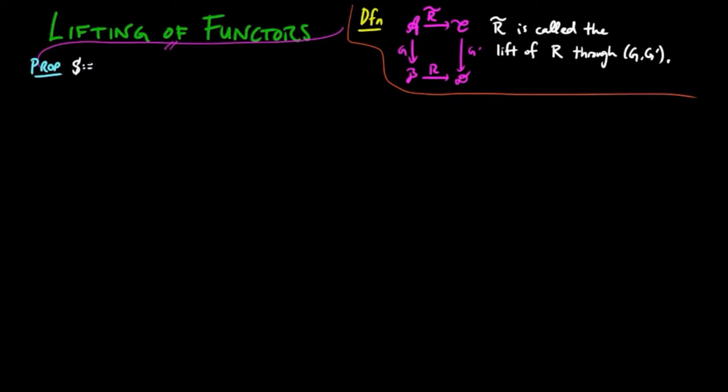We prove the following. Let s be a monad on a category f, fg be in an adjoint situation, and t be the induced monad on e of this adjoint situation.